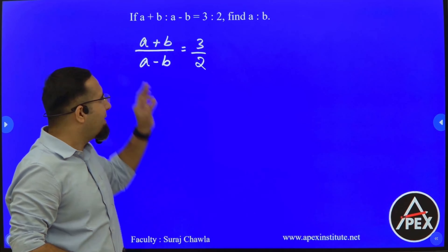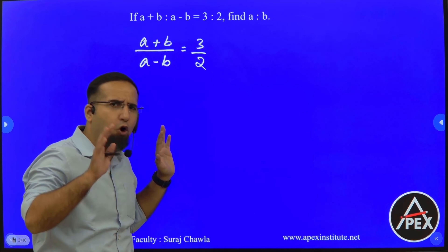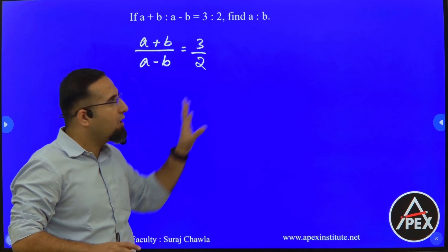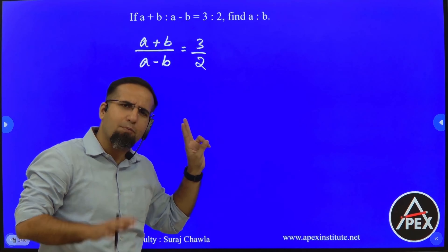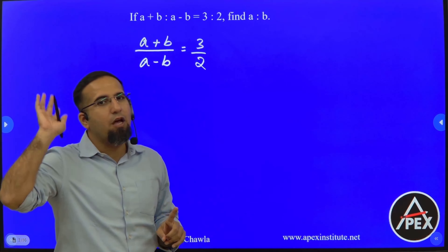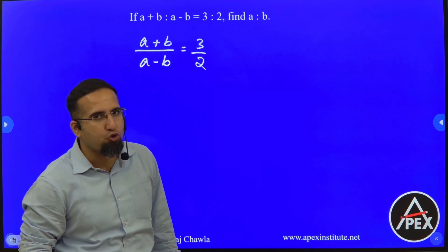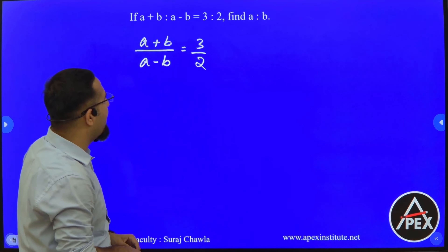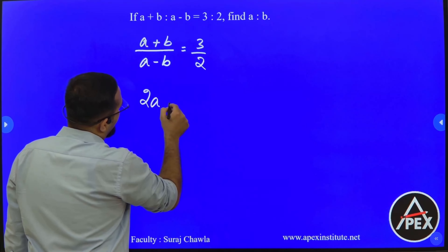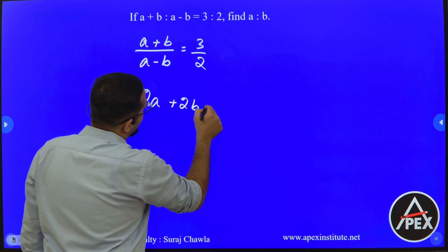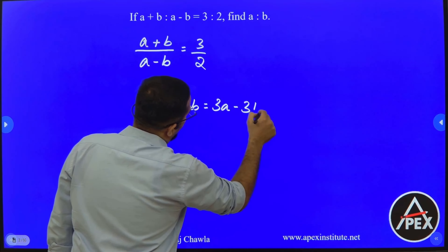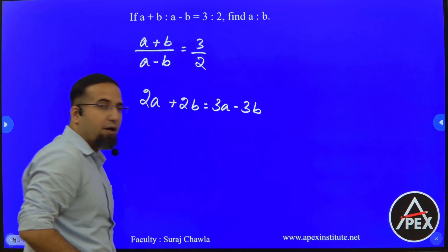Whenever we have equations like this where there is no constant, we will always be able to get the ratio of those two variables. We can apply this in algebra as well. So when I cross multiply, I get 2A plus 2B on my left-hand side and 3A minus 3B on my right-hand side.